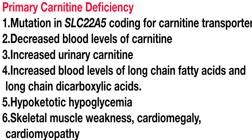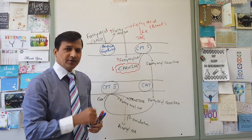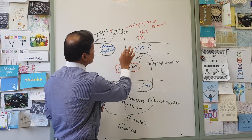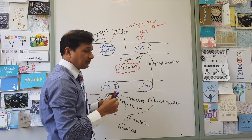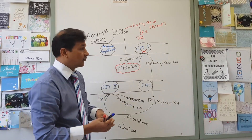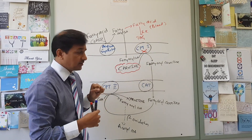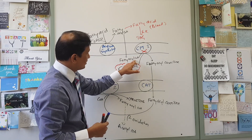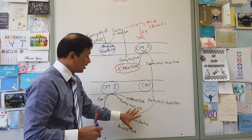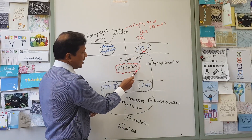This picture — decreased carnitine in blood, elevated long chain fatty acids, skeletal myopathies, and cardiomyopathies — can be seen in both primary and secondary carnitine deficiency. Now let us look at CPT1 deficiency — carnitine palmitoyltransferase 1. This enzyme, present in the outer mitochondrial membrane, normally condenses carnitine with fatty acyl-CoA to make fatty acyl-carnitine for transport into the matrix. If it is deficient due to a gene mutation, fatty acyl-CoA is not condensed with carnitine.